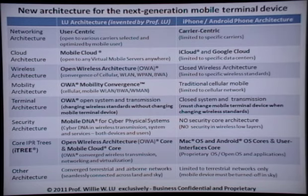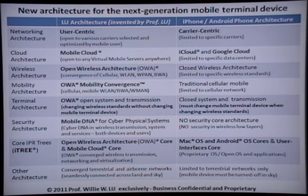The third one is wireless architecture. We're using the open wireless architecture — it's a convergence of cellular wireless, wireless LAN, wireless PAN, and broadband wireless access. It's a convergence of any wireless standards. The user's terminal is open to any wireless standards.